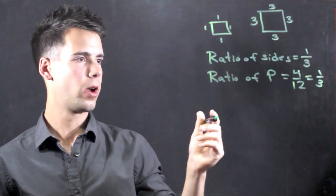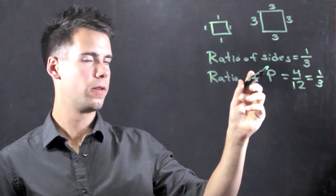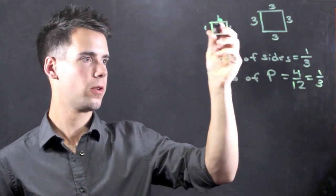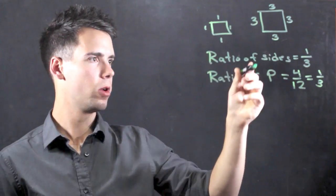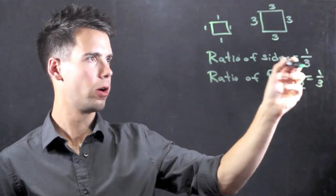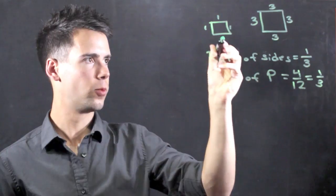So if we want to find the ratio of the perimeter of two polygons, we don't have to add them all up and divide them. We can simply look at the ratio of sides. So in this case, it's 1 to 3.